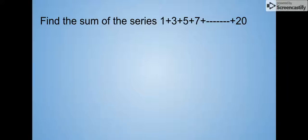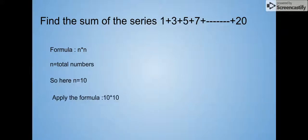Here, note that we're going to add only odd numbers up to 20. So the formula is n into n. Here, n is also 10 because up to 20 numbers, we have only 10 odd numbers. Now let's apply the formula.